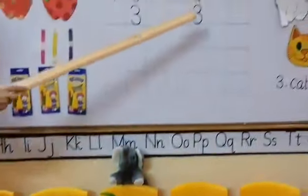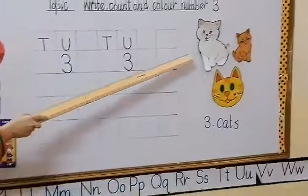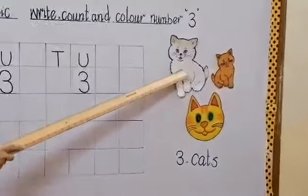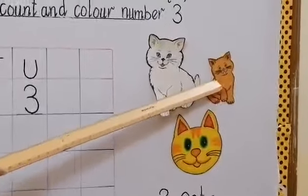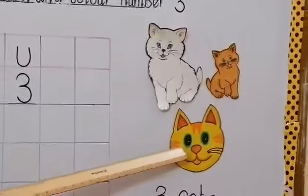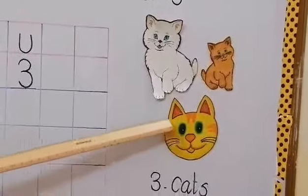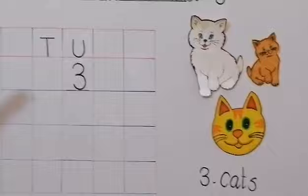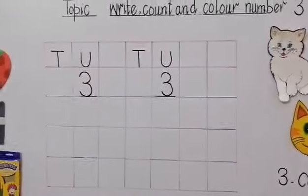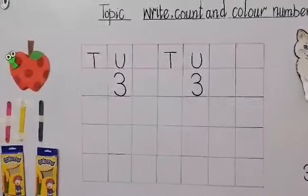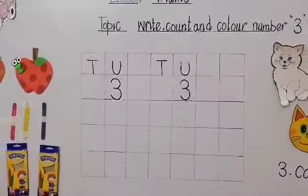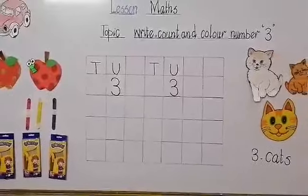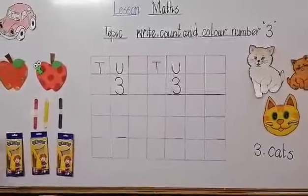Now count these cats and tell me how many cats are there? 1, 2, and 3. How many cats are there? 3 cats. Now we are going to learn how to write number 3 on our worksheet.